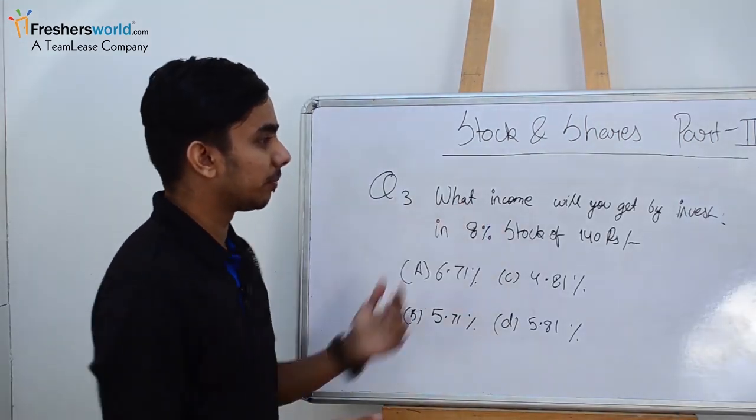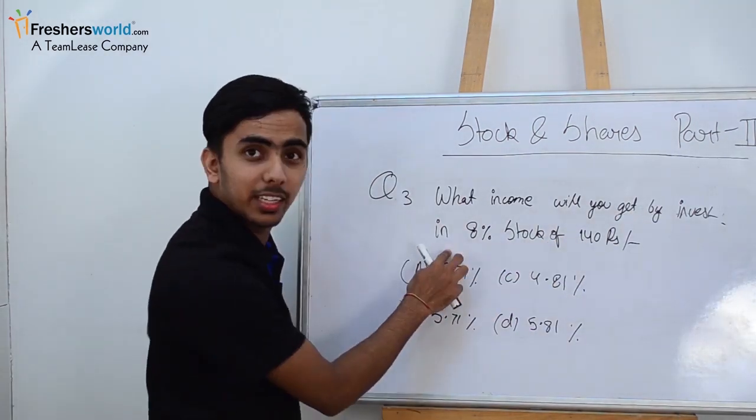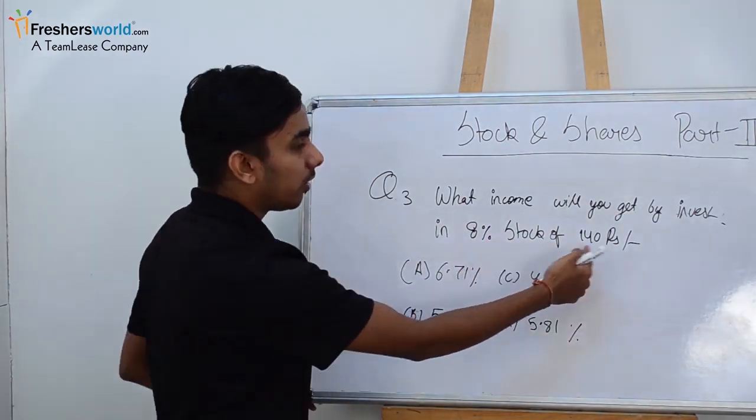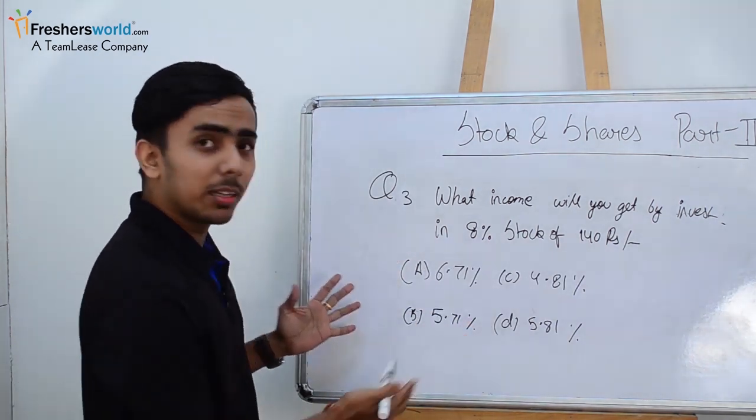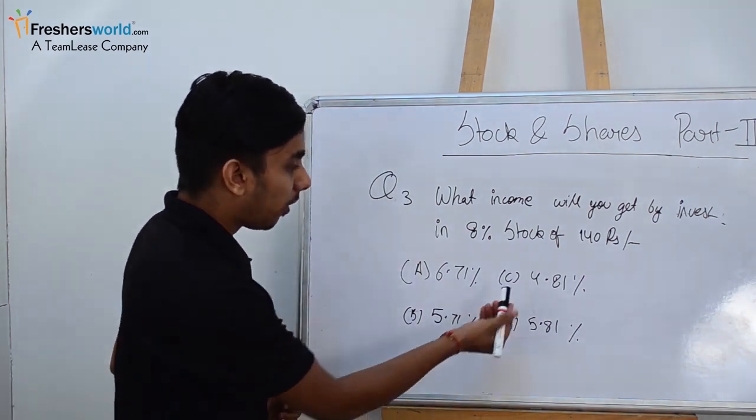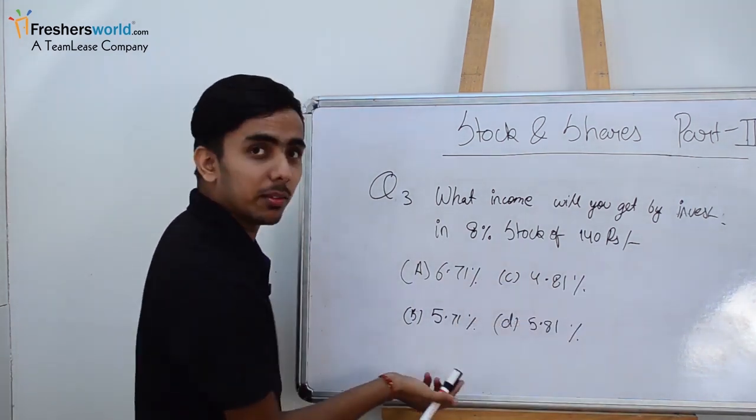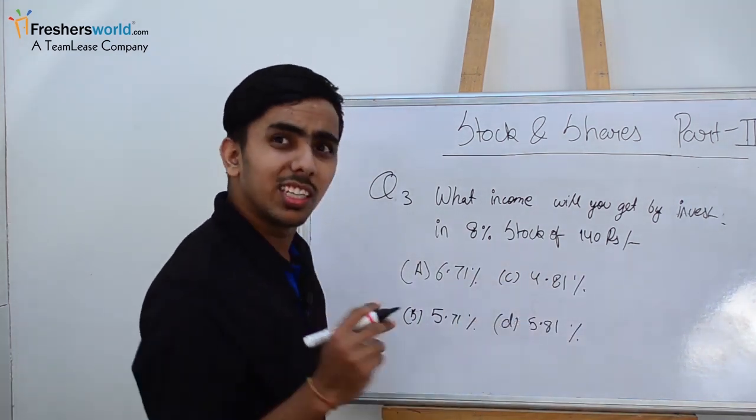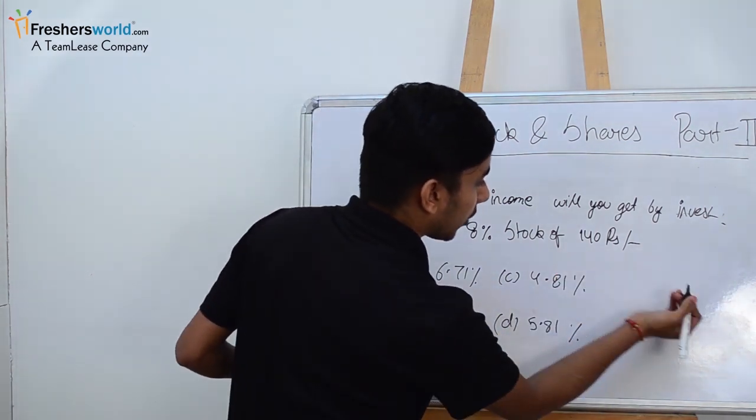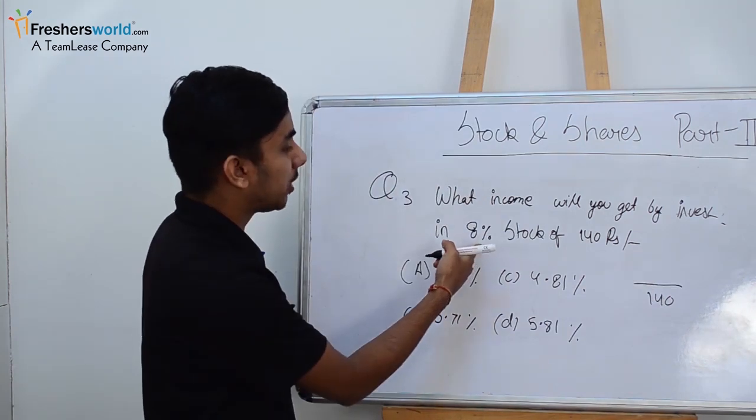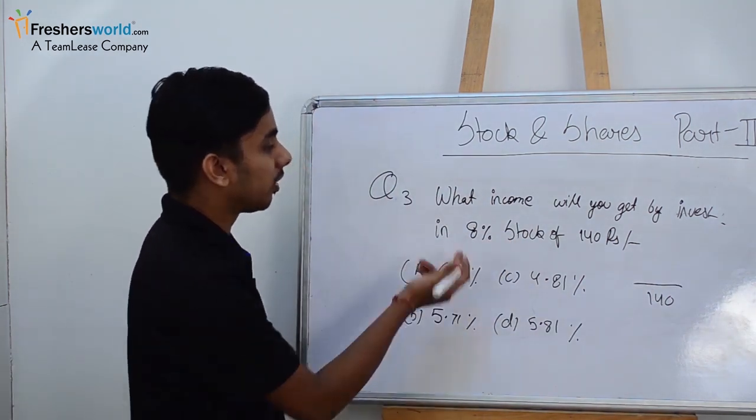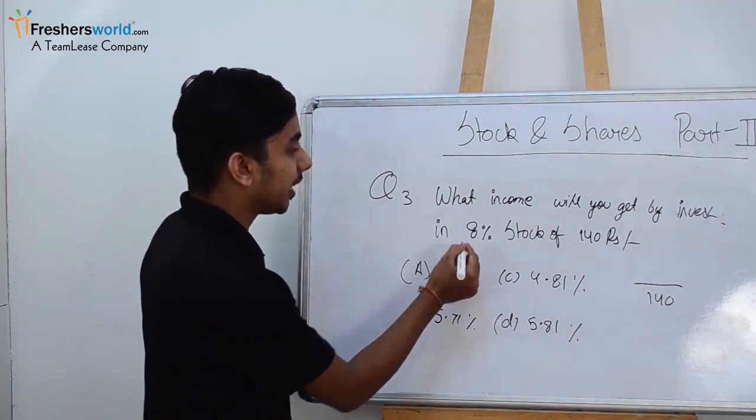Let's move to our third question. The third question is: what income will you get by investing in 8 percent stock of 140 rupees? You can see in exams you can find this situation. All our choices are in percentage, so it's a simple trick. You are investing 140 rupees. How much percent of stock is it? Because dividend you will get by this percent.